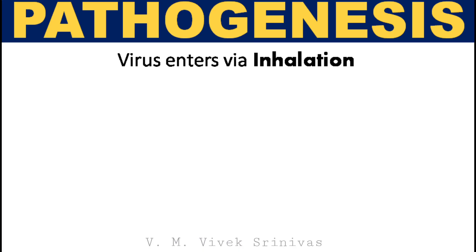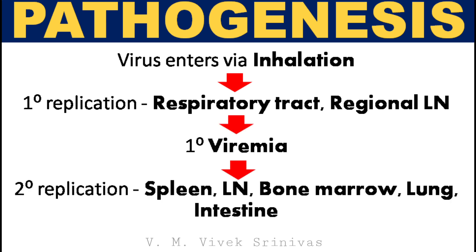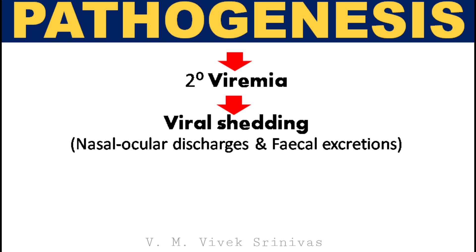Pathogenesis. Following entry of the virus through inhalation, the virus does its initial replication in the epithelium of the upper and lower respiratory tract and at the regional lymph nodes, followed by viremia. The next replication is at the lymphoid organs such as spleen, lymph node, bone marrow, lung, and intestine. Following secondary replication, the virus gets distributed through secondary viremia, with subsequent viral shedding through nasal, ocular discharges and fecal excretions. This virus survives in discharges and feces for 48 hours.